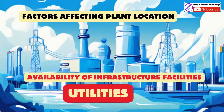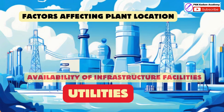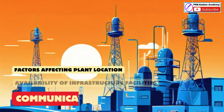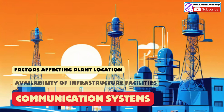Utilities: Access to reliable utilities including electricity, water, and gas is essential for plant operations. A location with robust utility infrastructure can ensure uninterrupted production. Communication Systems: Modern plants rely heavily on advanced communication systems. A location with cutting-edge telecommunication infrastructure supports effective management and coordination.